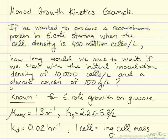How long would we have to wait to reach this cell density if we started with an initial inoculation density of 10,000 cells per liter and a glucose concentration of 100 grams per liter?